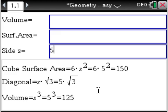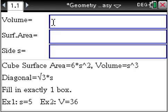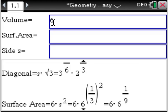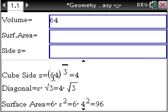So instead of having the sides, maybe your teacher will only give you the volume, you'll still have the answers. Let's say volume is 64. Cube side 4. Diagonal, 4 times the square root of 3. And surface area, 96. Just like that.